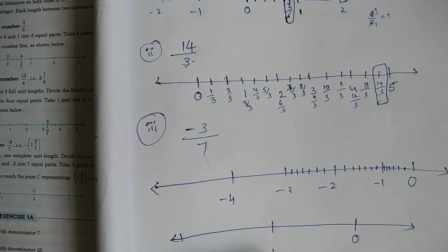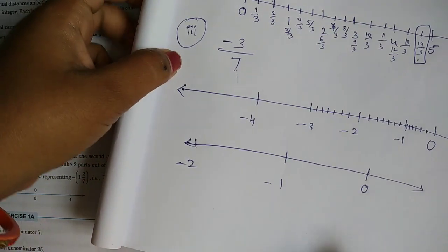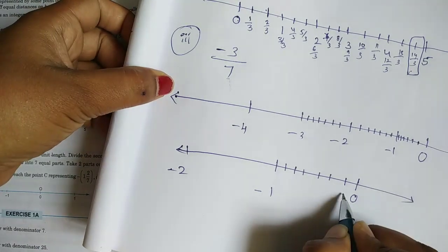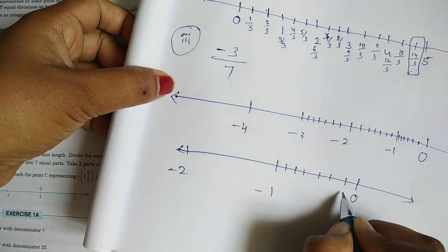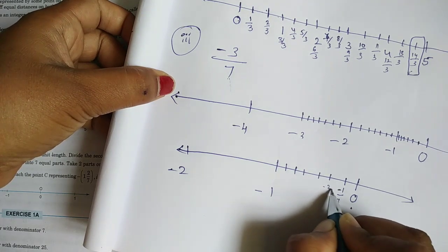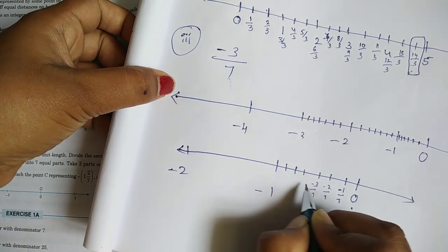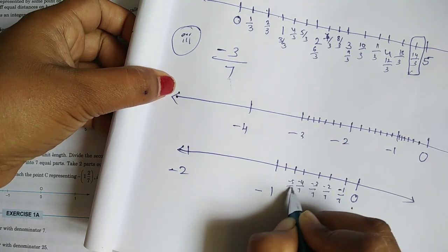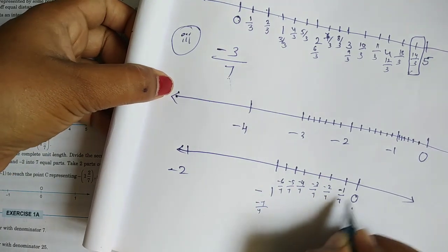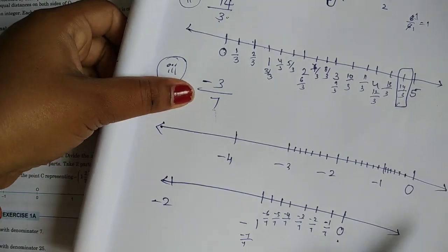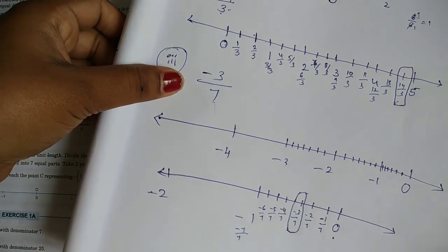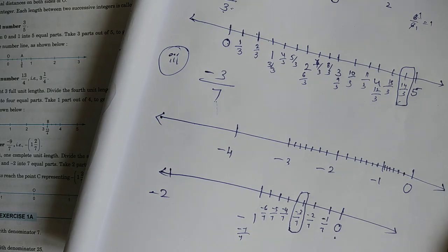On the negative side: 1, 2, 3, 4, 5, 6. The denominator is 7, so we divide each unit into 7 parts. This is 0. Counting: minus 1 by 7, minus 2 by 7, minus 3 by 7, minus 4 by 7, minus 5 by 7, minus 6 by 7, minus 7 by 7. So minus 3 by 7 is marked right here.